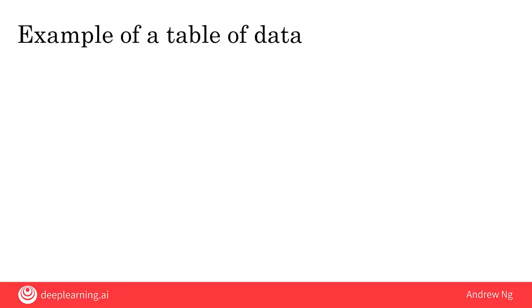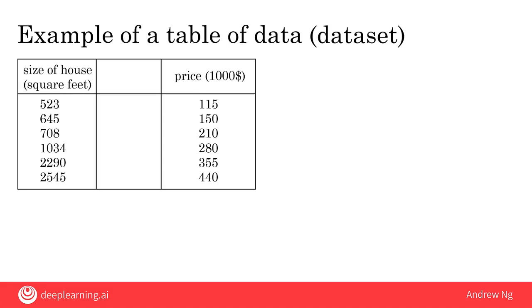You may have heard that data is really important for building AI systems, but what is data really? Let's look at an example of a table of data, which we also call a dataset. If you're trying to figure out how to price houses, you might collect a dataset like this—a spreadsheet like an Excel spreadsheet where one column is the size of the house in square feet or square meters, and the second column is the price of the house.